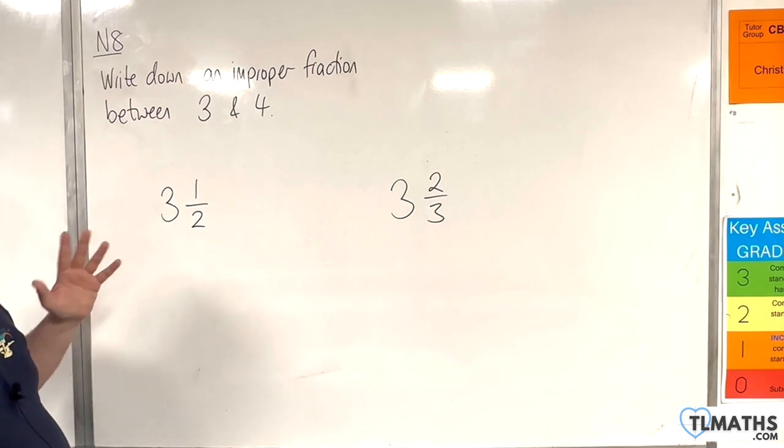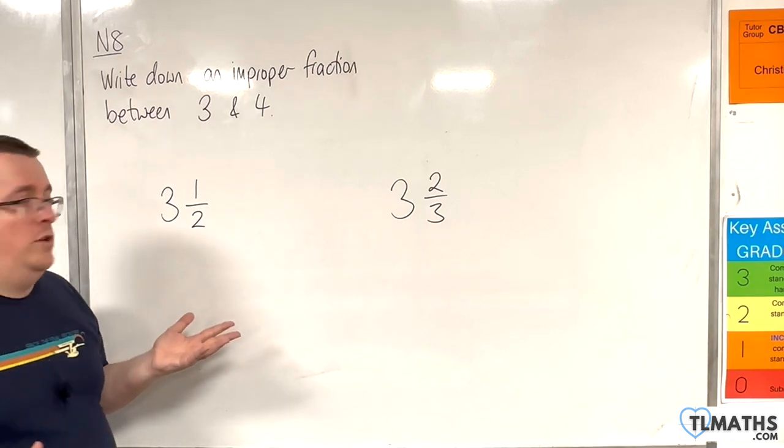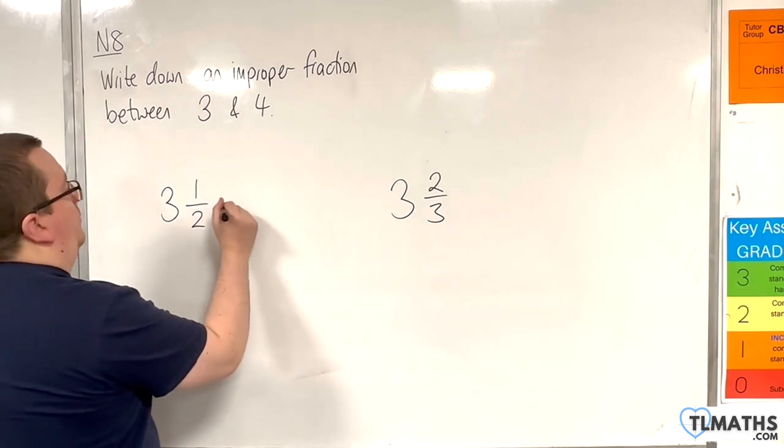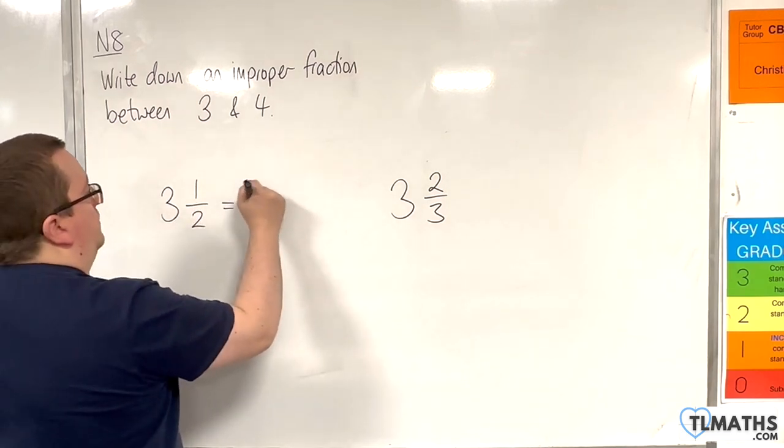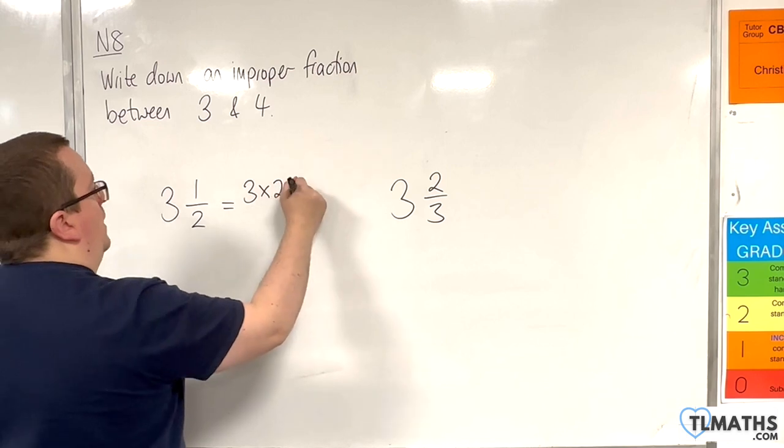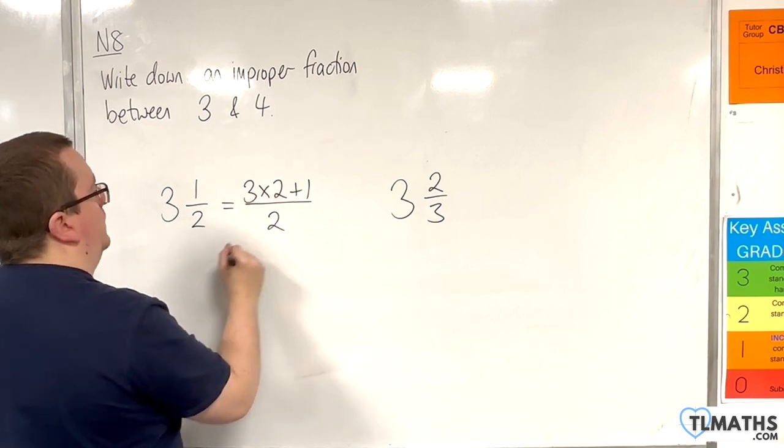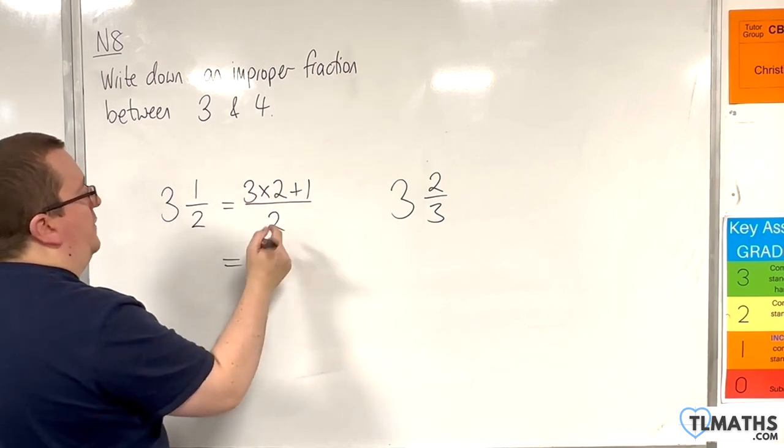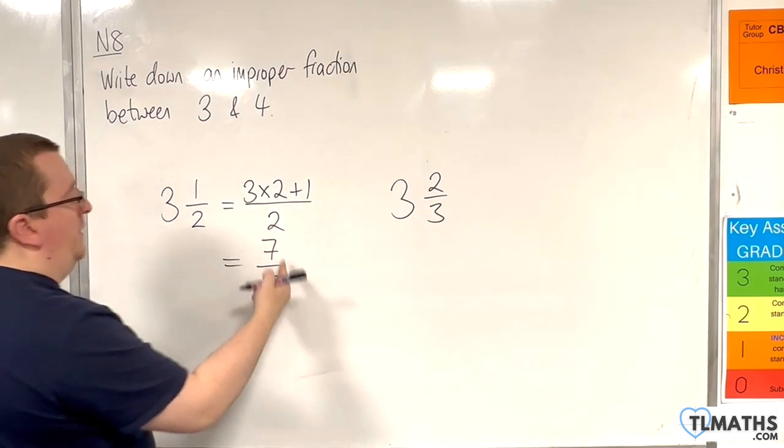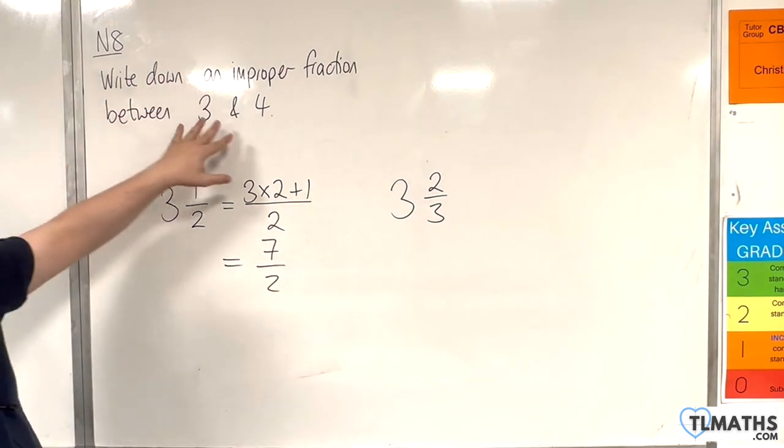Now we just need to convert it into an improper fraction. So that is by doing 3 times 2 and then adding on the 1 over 2. We're going to get 7 over 2. So 7 over 2 is an improper fraction between 3 and 4.